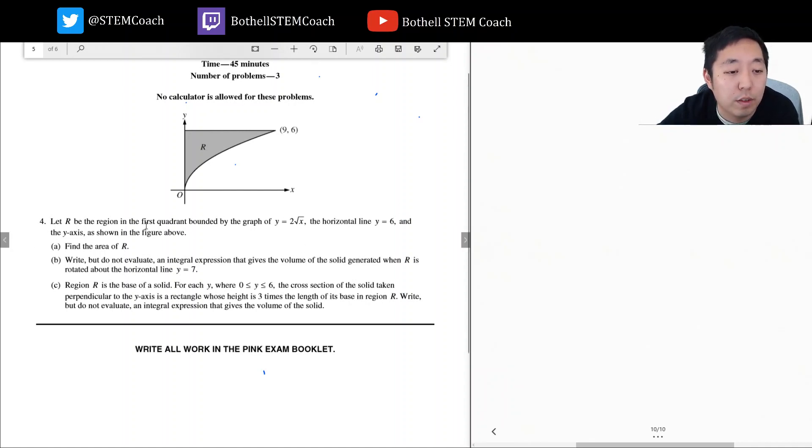Let R be the region of the first quadrant bounded by the graph y equals 2 root x, the horizontal line y equals 6, and the y-axis, as shown in the figure above. So this region here, find the area of R.